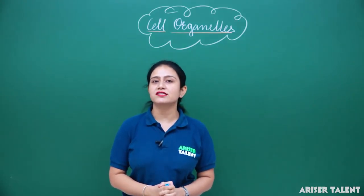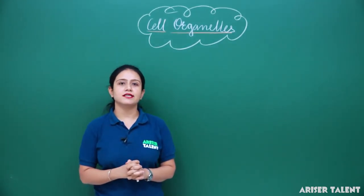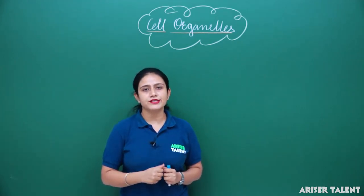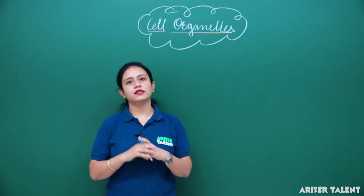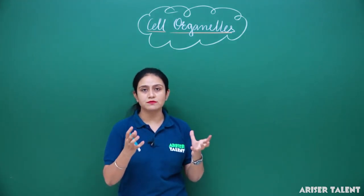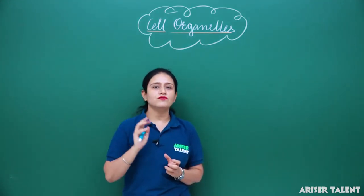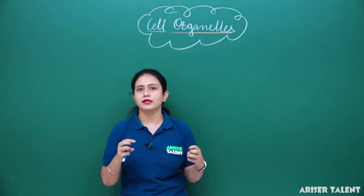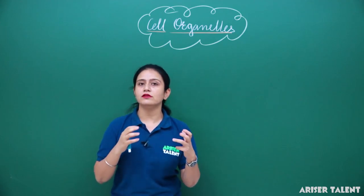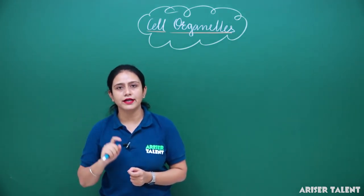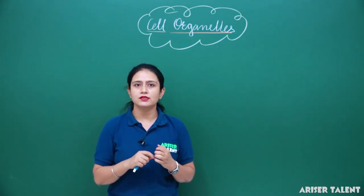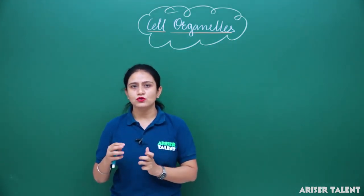Hello students, welcome to Arise the Talent. As you know, we are studying the very important chapter of CBC Class 9 Biology - the fundamental unit of life - in which we have already studied about the three important components of eukaryotic cell: plasma membrane, nucleus, and cytoplasm. Now we are studying cell organelles, which are membrane-bound subcellular structures of the cell. In my previous lecture I told you about endoplasmic reticulum, which gives rise to Golgi apparatus, lysosome, and vacuoles.